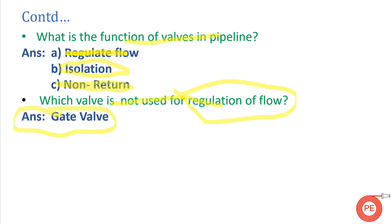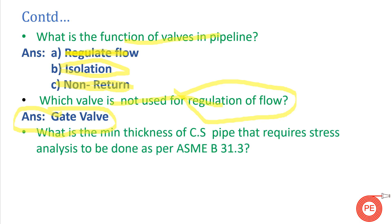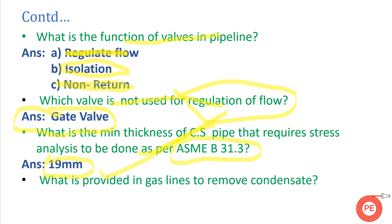What is the minimum thickness of a CS pipe that requires stress analysis to be done as per ASME B31.3? If you refer to ASME B31.3, the thickness mentioned is 19 mm. So if the wall thickness is greater than 19 mm, it must be considered under stress analysis.